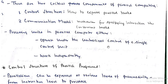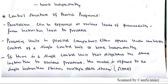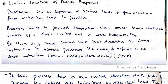Processing units in a parallel computer either operate under centralized control of a single control unit, or work independently. In control structure there are two things: SIMD and MIMD, which we will study further. Parallelism can be expressed at various levels of granularity, from instruction level to process level.